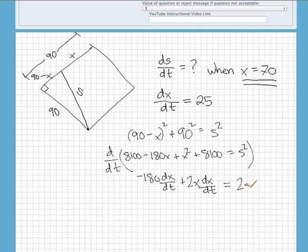We get -180x dx/dt plus 2x dx/dt, derivative of 8100 is 0, and then we get 2s ds/dt. So we actually have everything except s, so we got to find s.